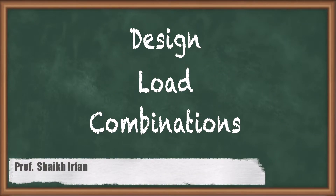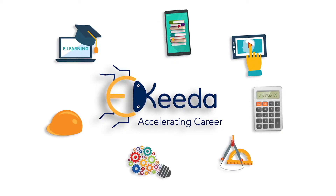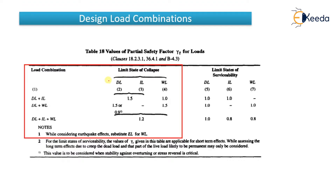Hello everyone. In this video we are going to see design load combinations — the various types of combinations of loads that you have to use in the design. The design load combinations are taken from IS code, IS 1893:2002, which is available on Google if you search 'IS 1893 2002 PDF'. From table number 18, it gives values of partial safety factor gamma f for the loads.